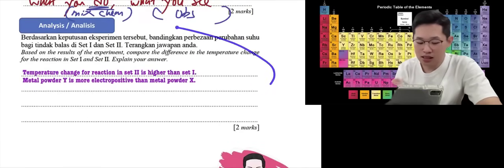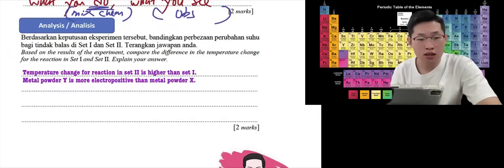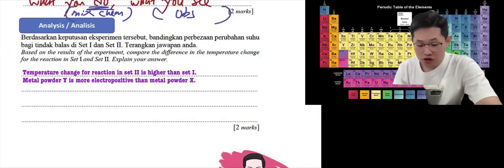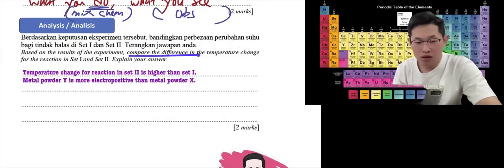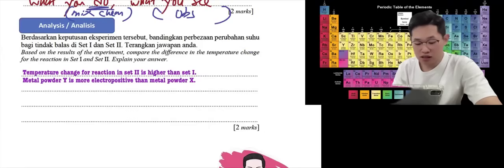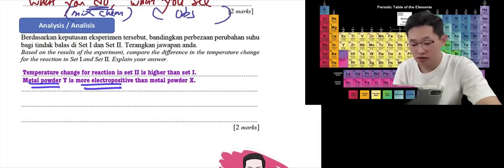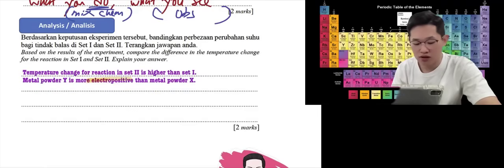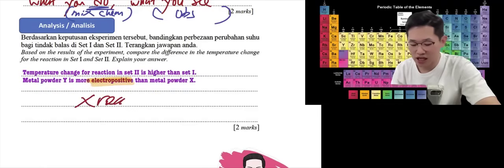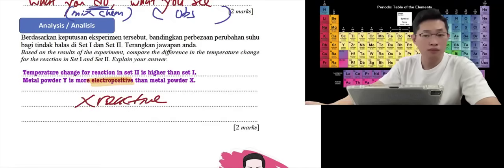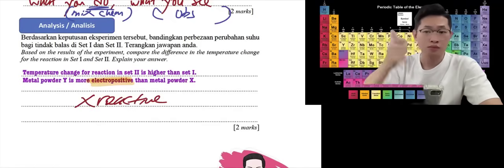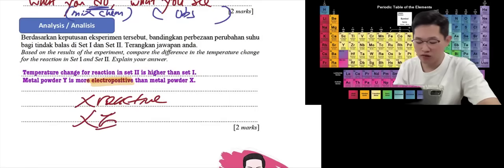For analysis, they want you to compare the results and explain why the temperature change is different. For example, if set 2 is higher than set 1, it is because metal powder Y is more electropositive than metal powder X. You must use the word 'electropositive' — you cannot write 'reactive' or use e0 values. Must be electropositive.